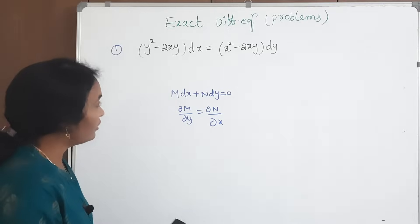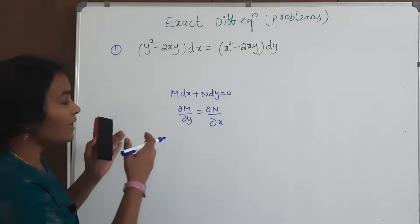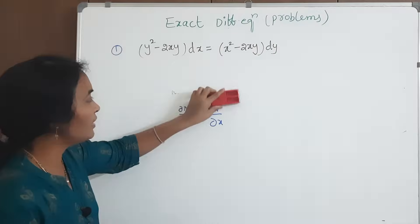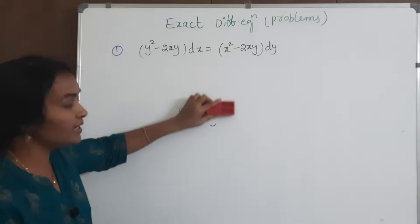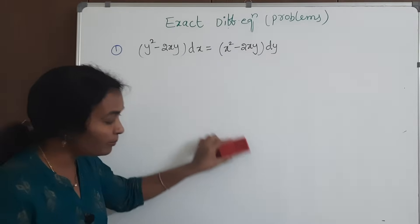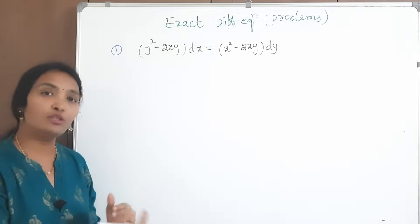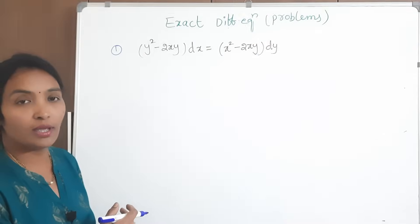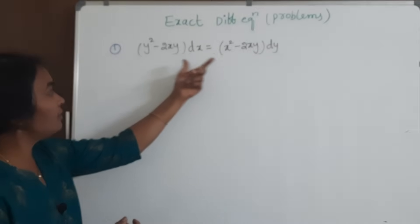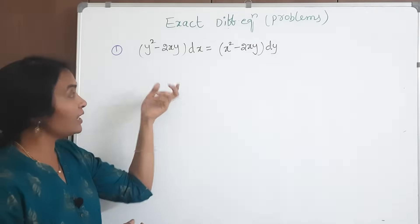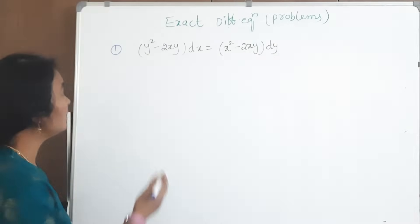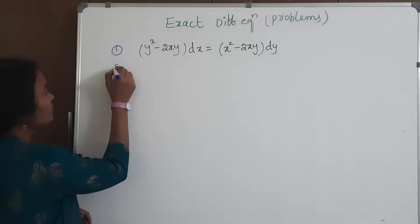Now, first of all, is this exact or not? Just check whether this looks like M dx plus N dy form. If it is not in that form, we need to change it. I will take the N term to this side — then what will happen? Just observe the solution.